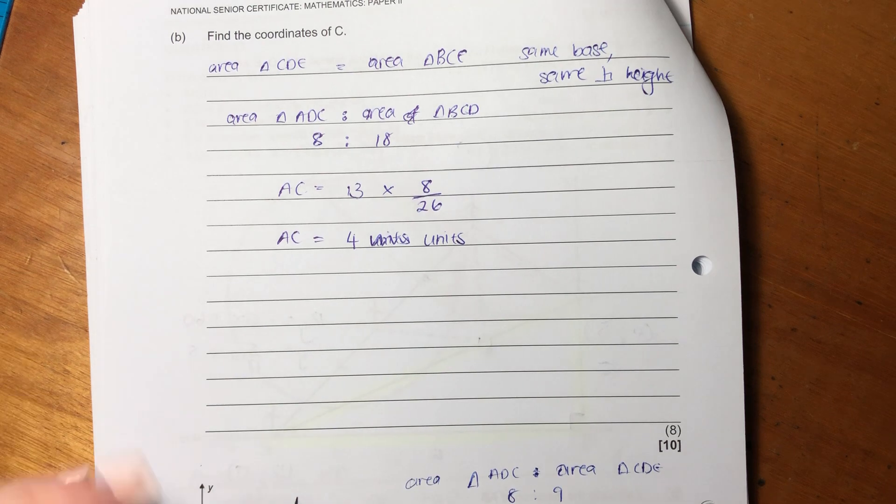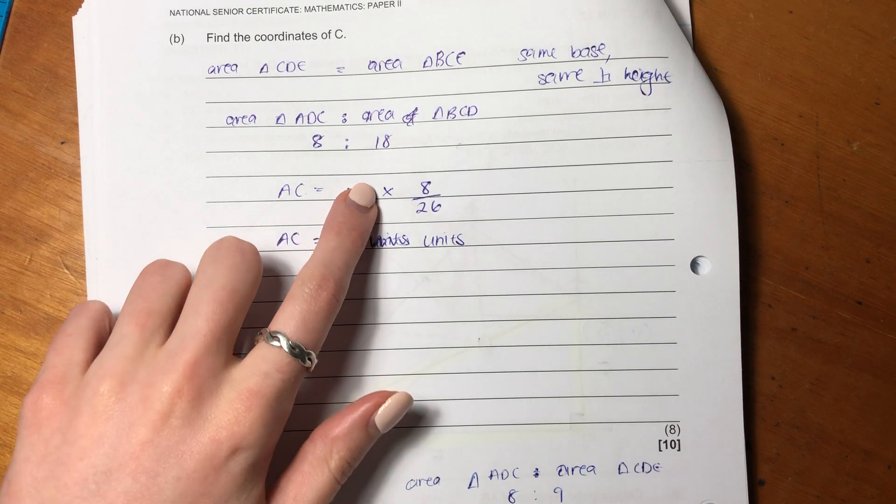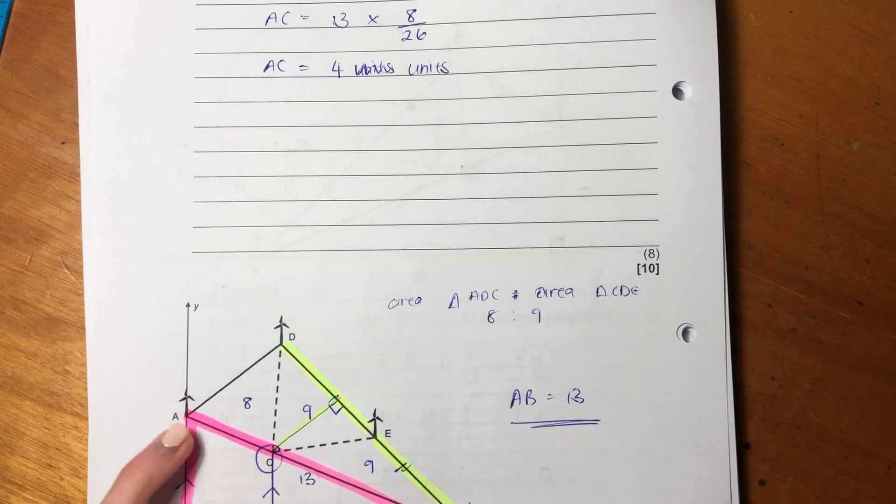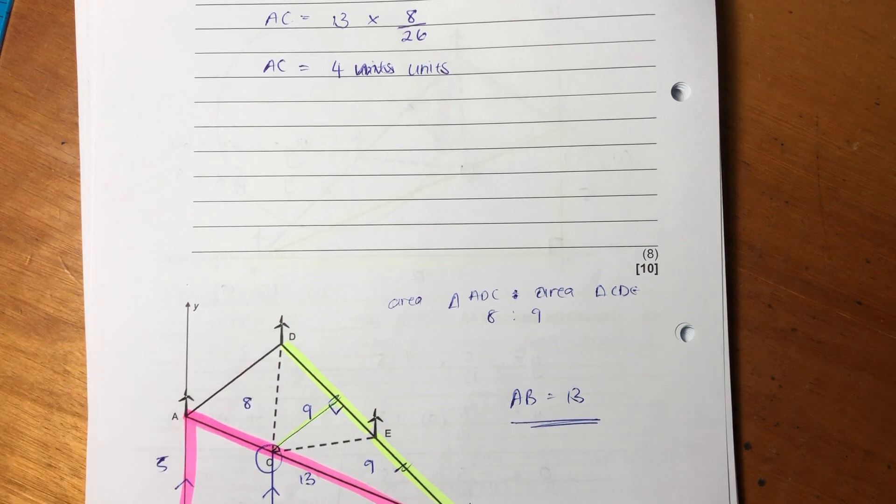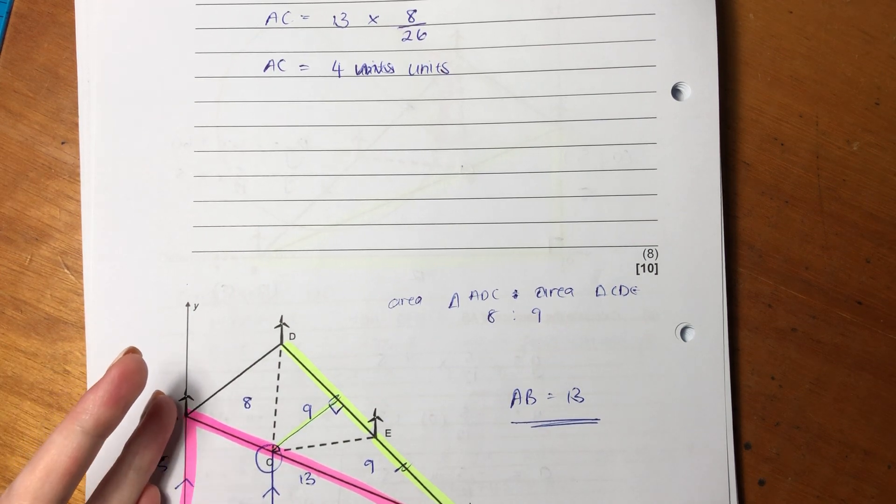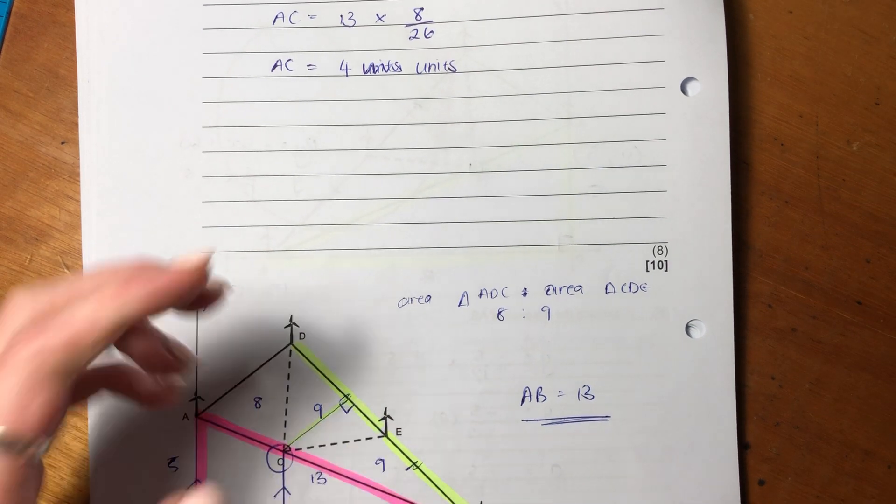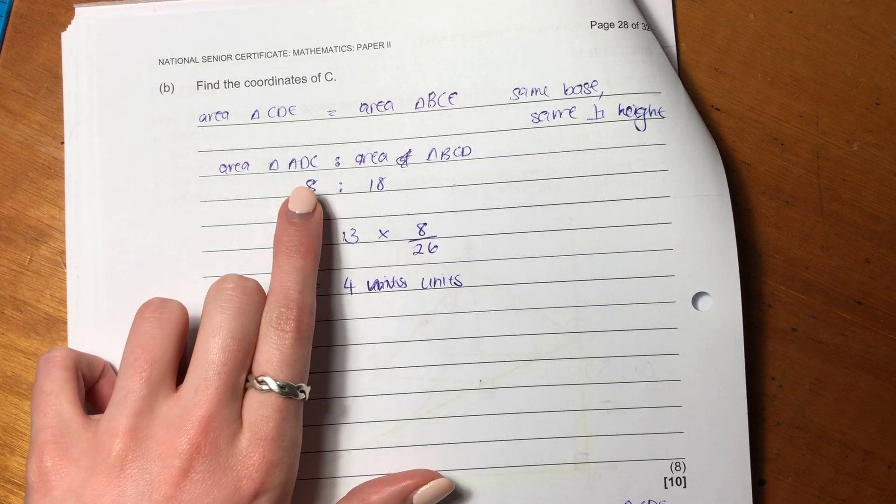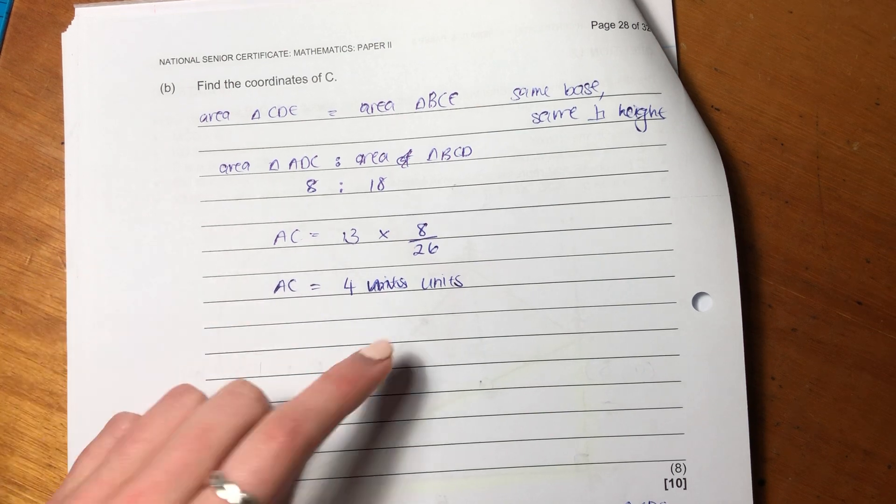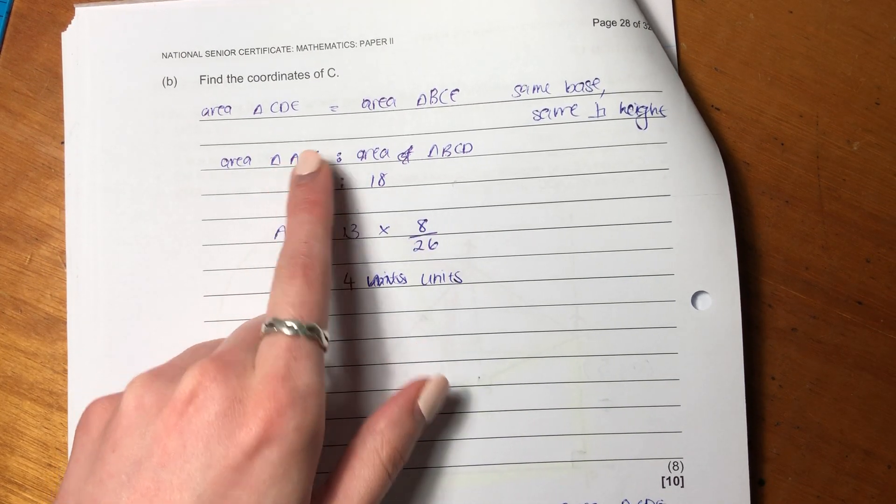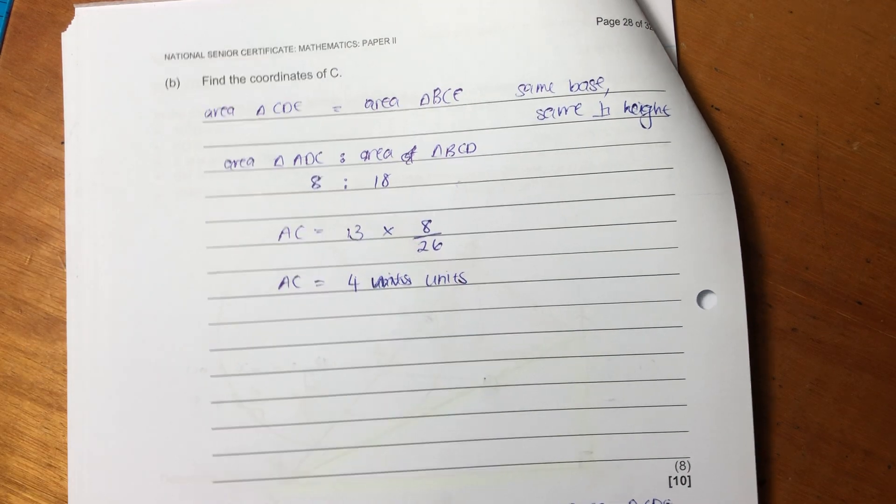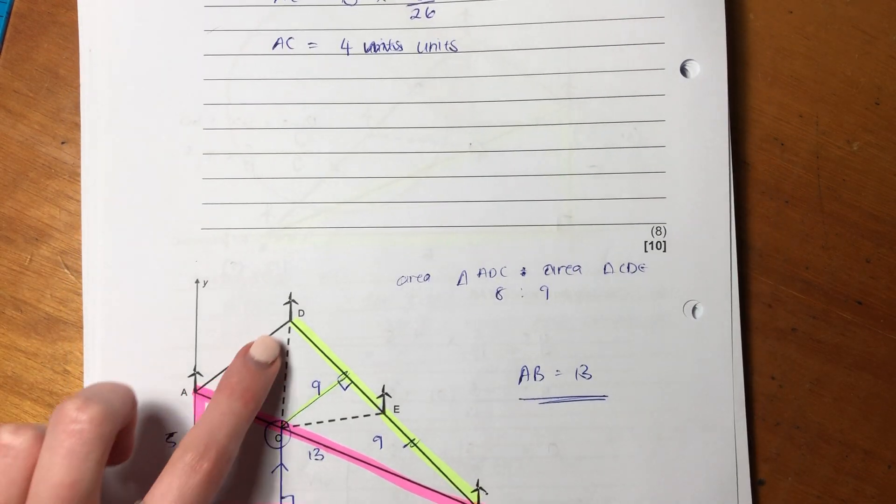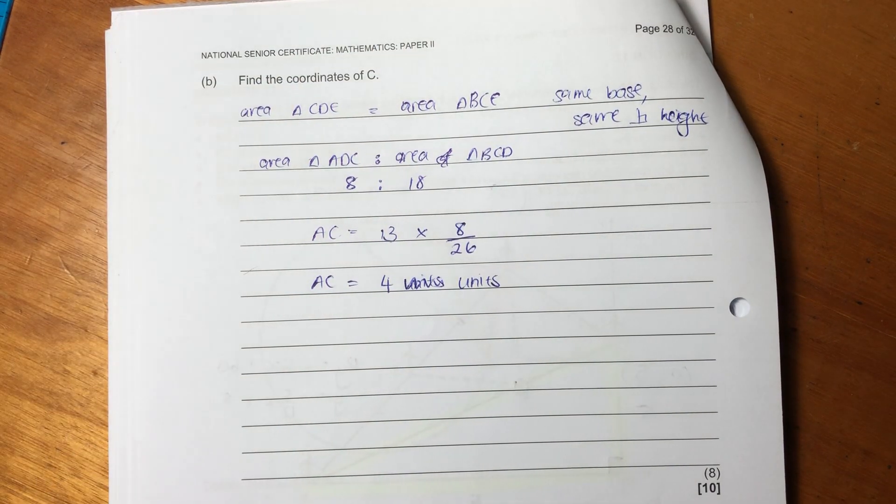So now what I want is I want to find AC. I keep telling you I want to find AC. And now you're like, okay, how do you find AC, Marks? So I'm saying, well, AC is 13 times by a ratio of what AC is as a proportion of this larger triangle. So it's going to be 13 times 8 over 26. Now you're saying, where did 26 come from? Well, 8 plus 18 gives us 26 in total. 8 is what is attributable to triangle ADC. And 26 is the whole of this very big triangle here. So then AC is 4 units. So we've got that AC is 4 units.